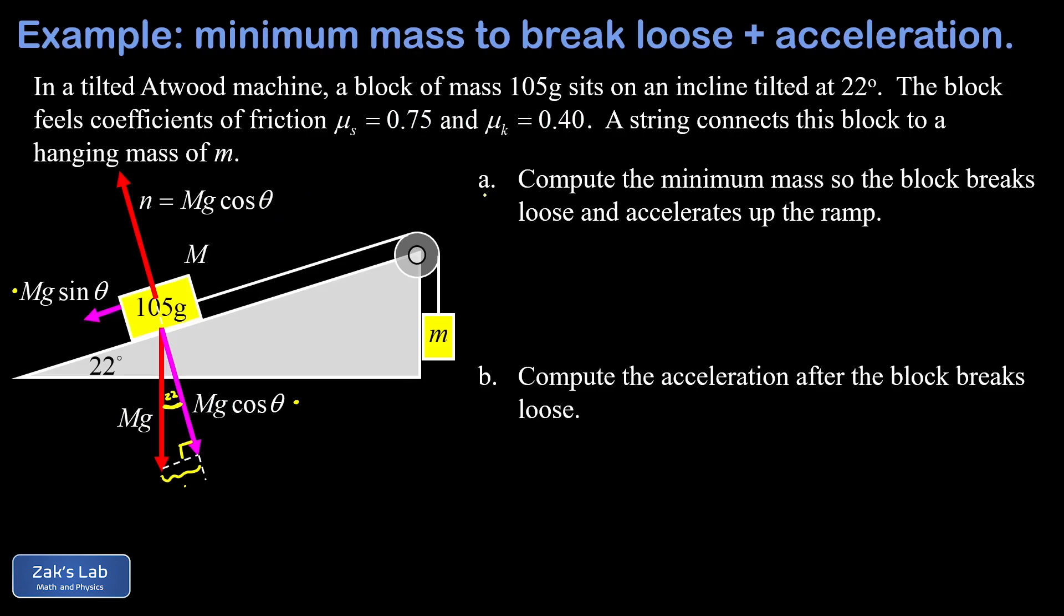And before we do the friction force, just a quick reminder here, we're talking about the minimum mass so this block breaks loose and begins to slide up the ramp. And at that break loose cut line, everything is still going to be static. But we're at the exact balancing point where the static friction force is maxed out and barely holding this thing in place, resisting the tension pulling it up the ramp.